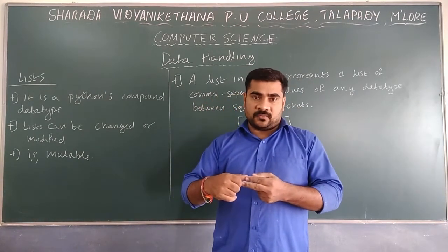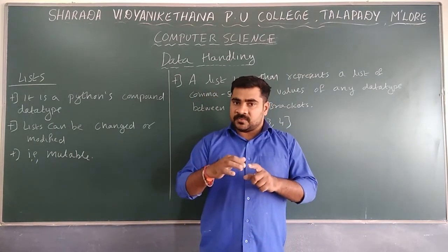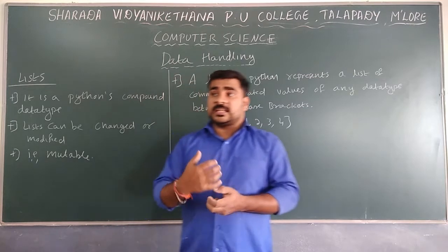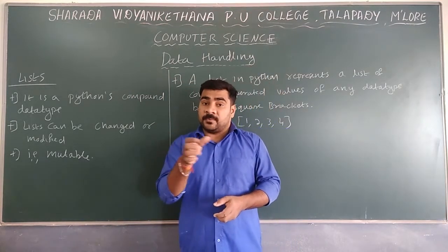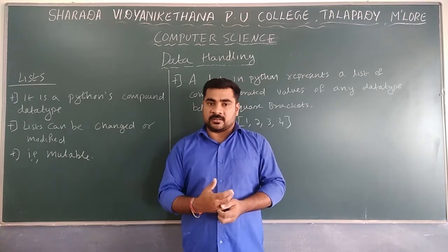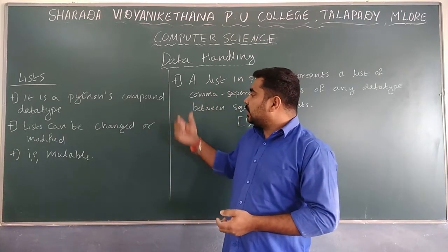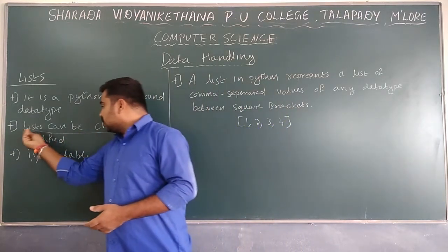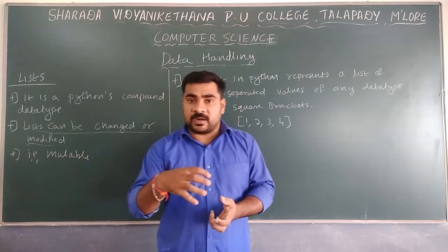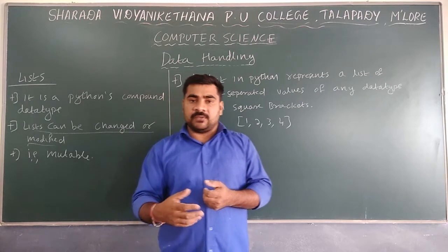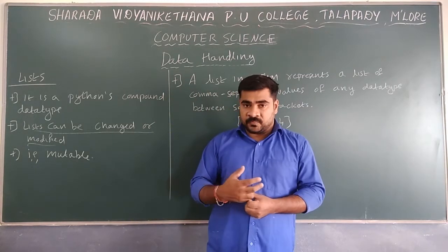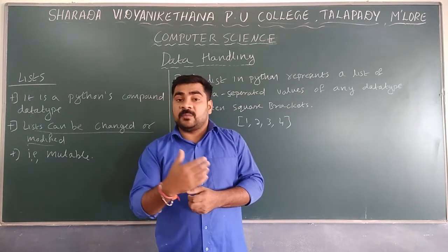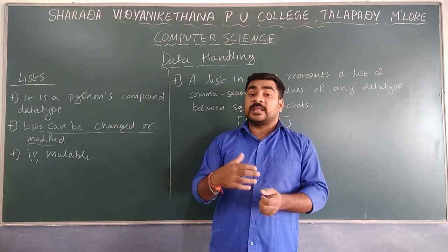In Python, list means we can hold different types of values — multiple values can be held inside a single variable. List is the first compound data type. The key point: in case of list the data can be changed or modified. If you want to change data in between, that is possible in case of list, but in case of strings it is not possible to change individual characters.